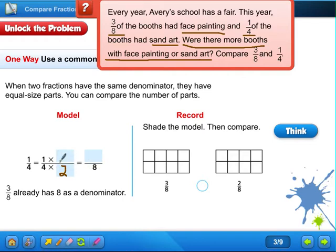And whatever you do to the bottom, you have to do the top. So if I multiply this by two, I'm going to have to multiply the top number by two. One times two equals two. So two eighths is equal to one fourth.